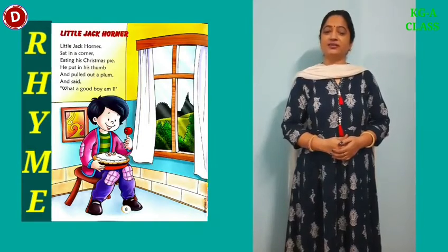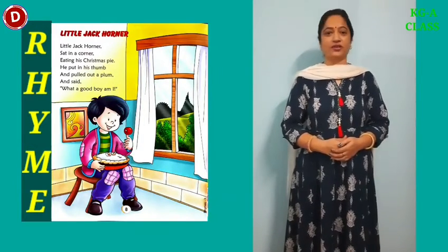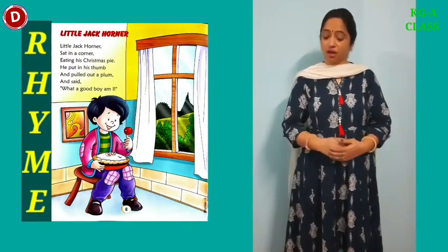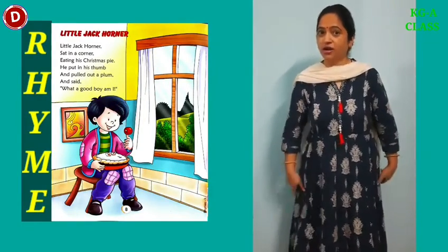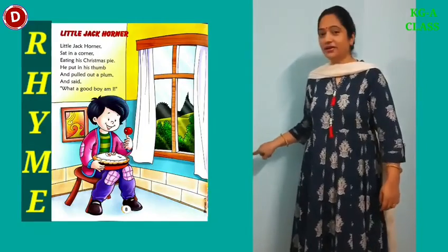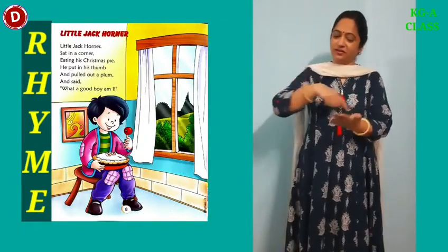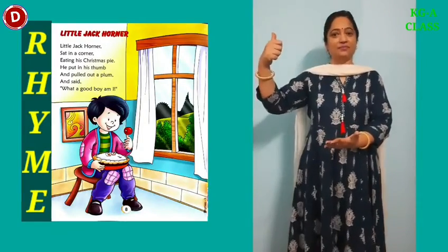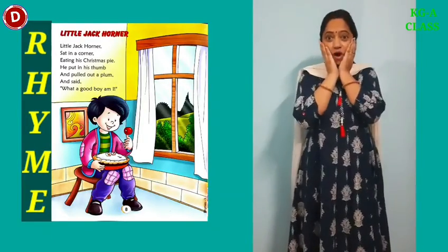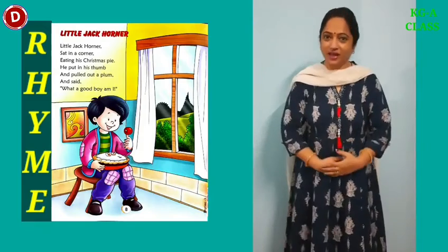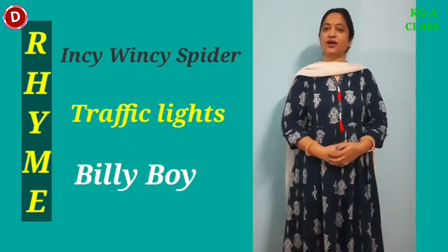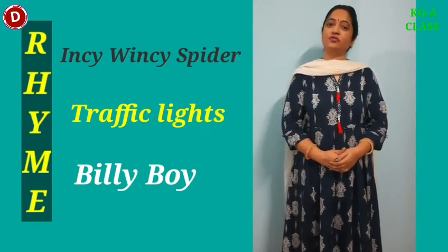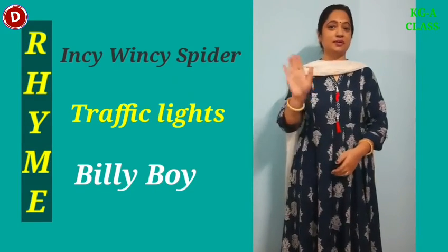Now let's revise the rhyme Little Jack Horner with actions. Little Jack Horner sat in the corner, eating his Christmas pie. He put in his thumb and pulled out a plum, and said what a good boy am I. In this way, children, you have to revise these three rhymes with actions. Learn it, revise it, and make a video on it and send it to me. See you in your next class. Bye bye.